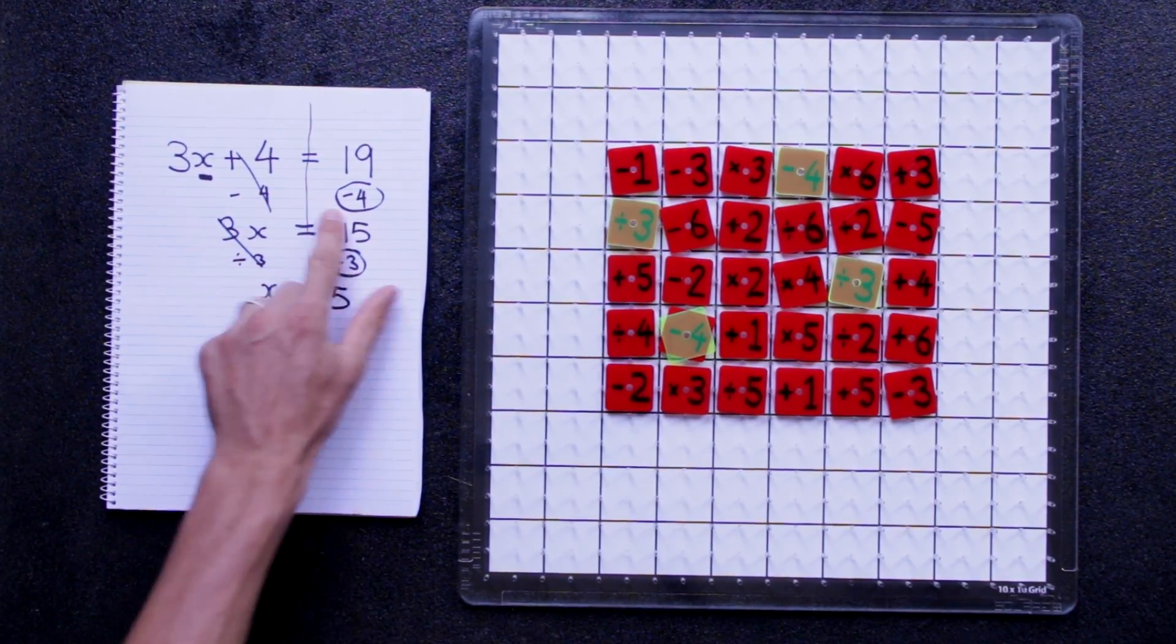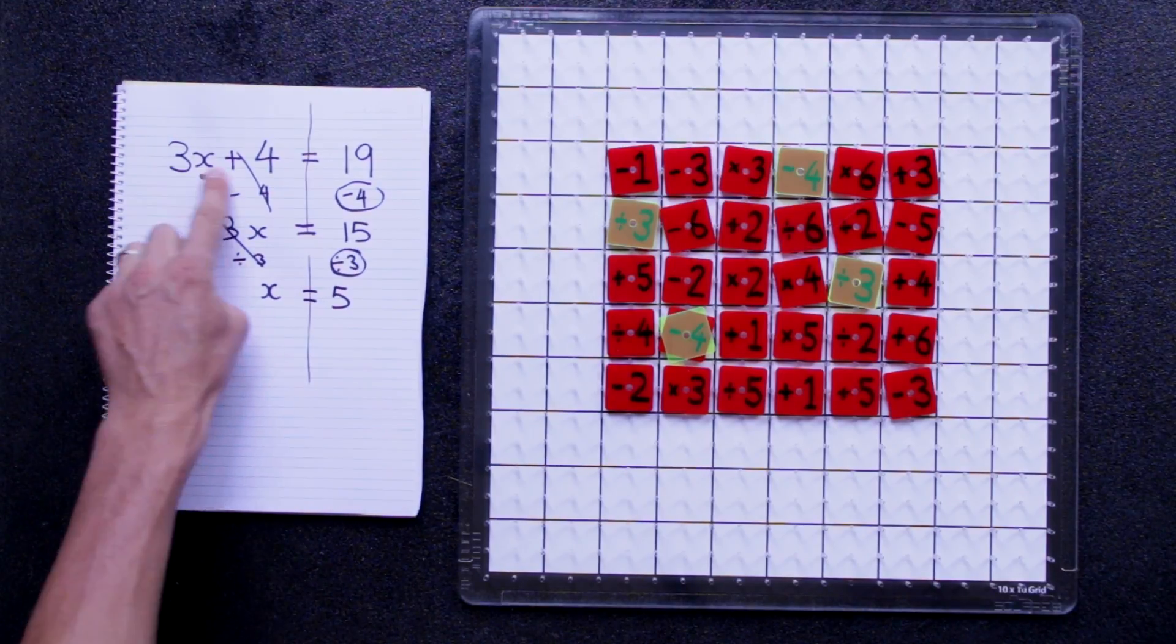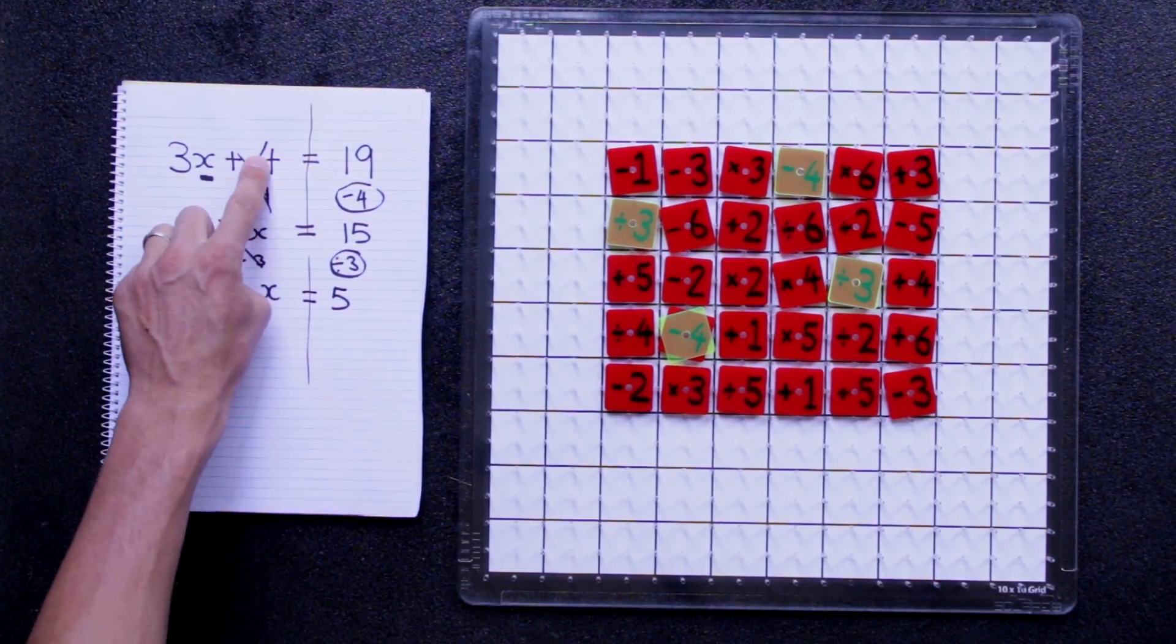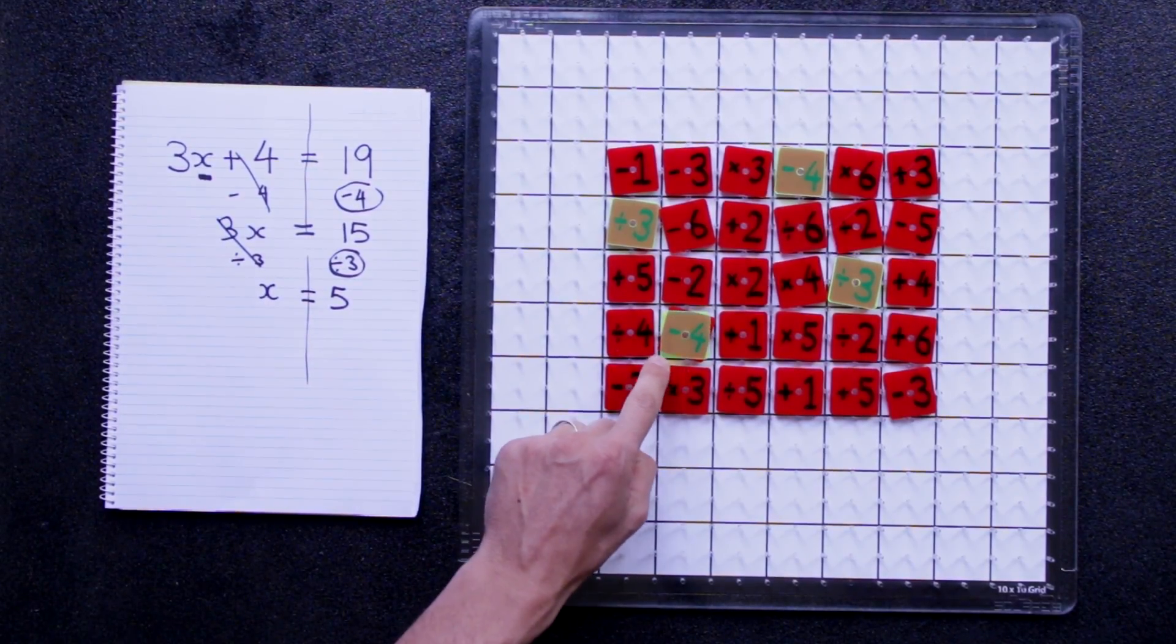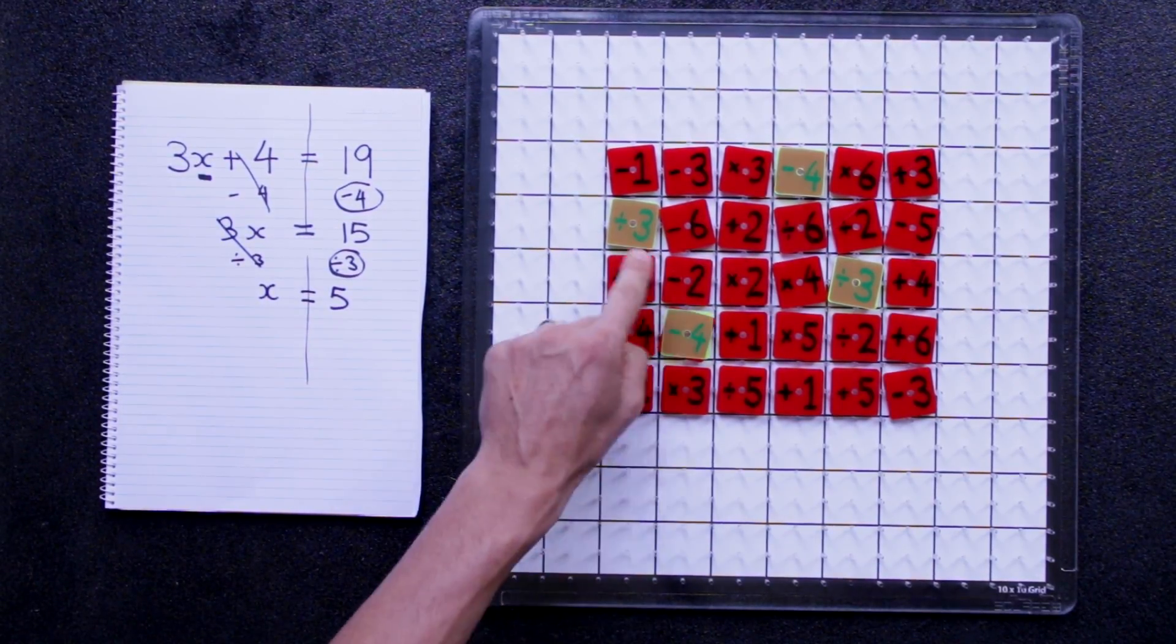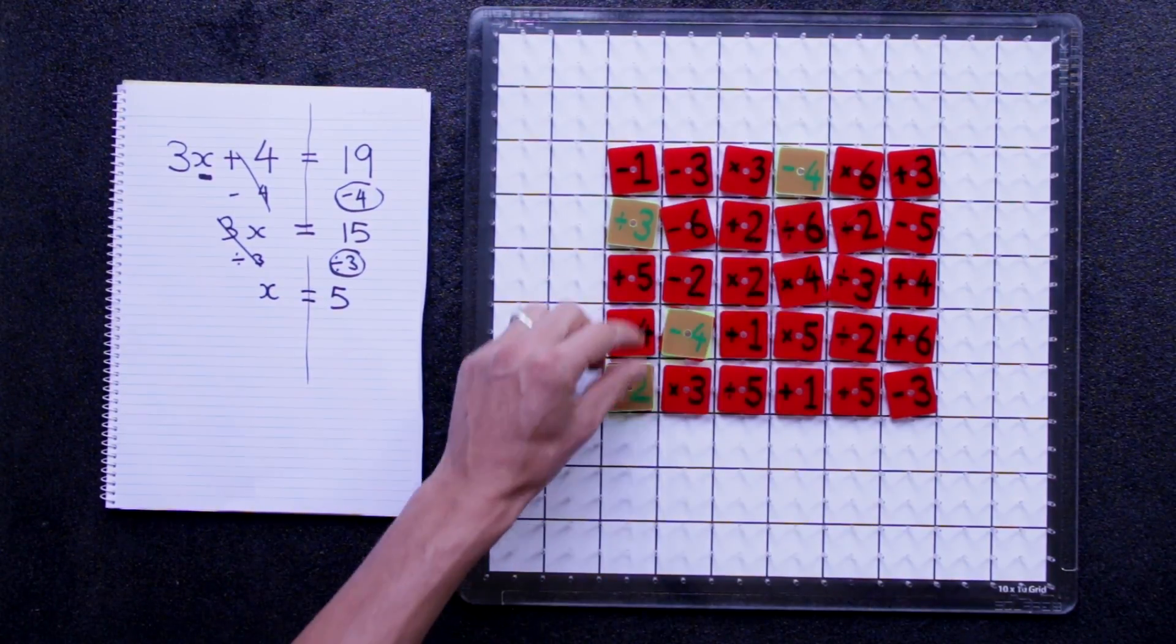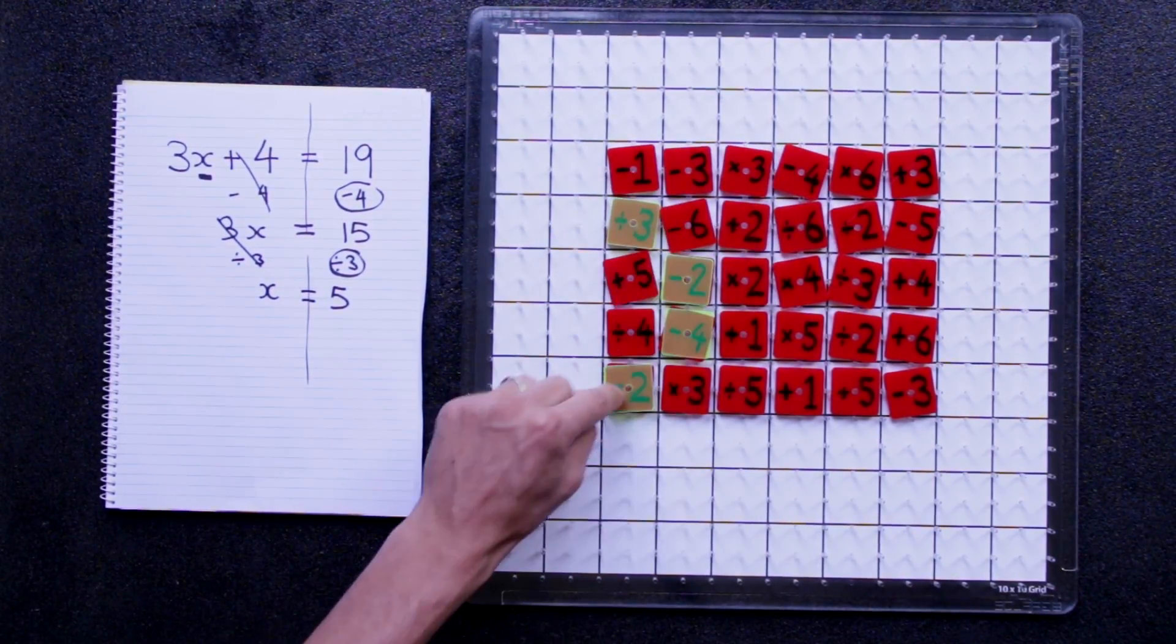Now we need to subtract 4 first because if we divide by 3 from the start, you'll have to divide 4 by 3 and that won't work unless you like decimal numbers, which no one does. So we need to do this one first. So imagine you did this as your path.